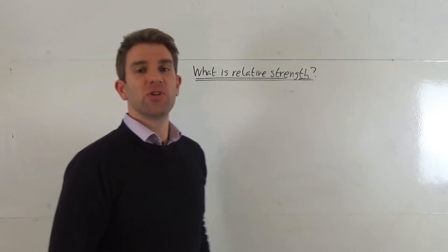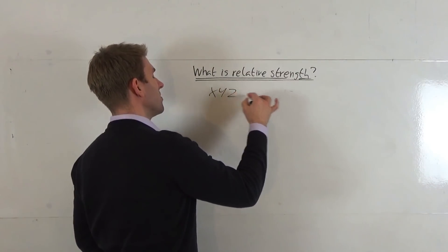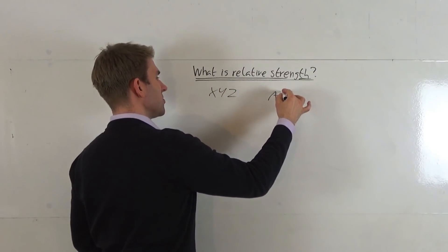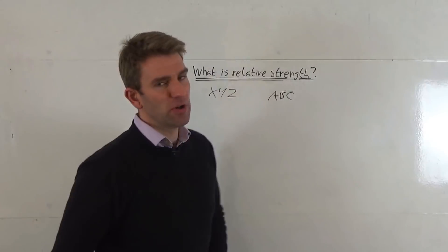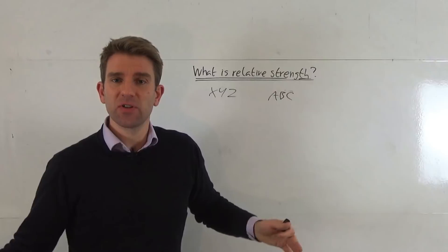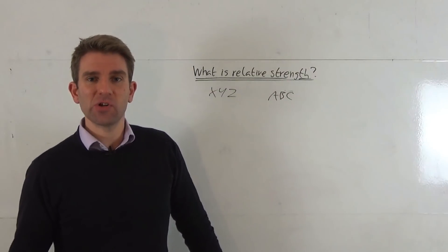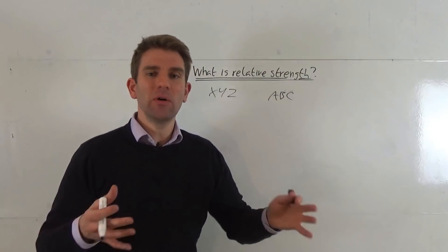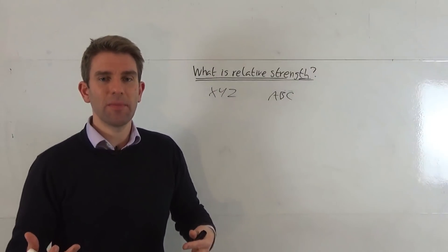The official definition is when you take one stock, let's say it's XYZ stock, and you divide it by ABC stock value. You get a ratio and you can say, well actually this stock is twice as strong as this stock. That's kind of the official definition. I kind of get that, it makes sense and someone has to quantify it somehow.